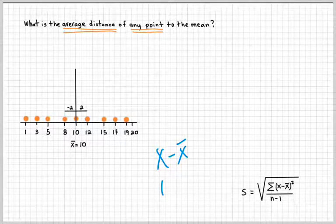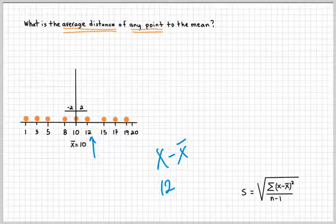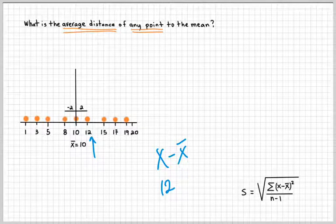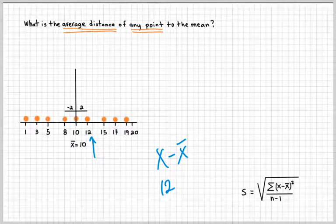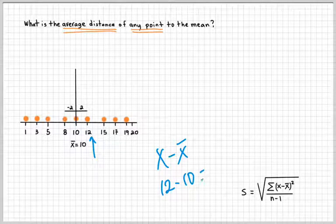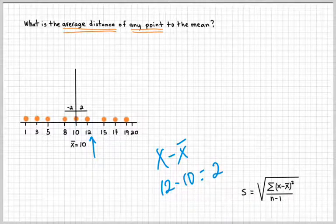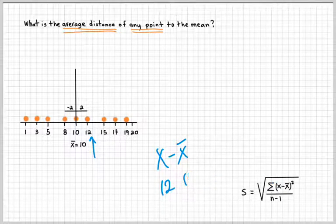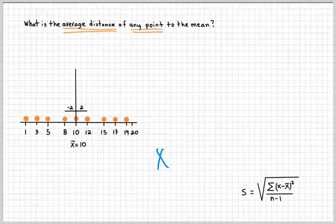X meaning a point, let's say 12, and x̄ is going to be 10. And there's a subtraction that gives you a distance of 2, which is part of the formula for the standard deviation. And you can do that for all the points.